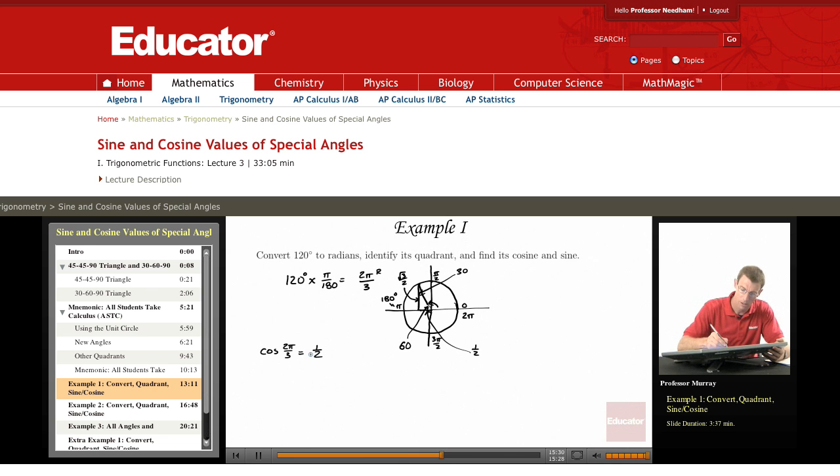So remember, all students take calculus. In the second quadrant, only the sine is positive, so the cosine must be negative.